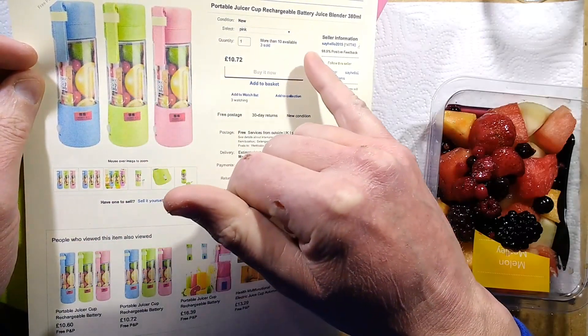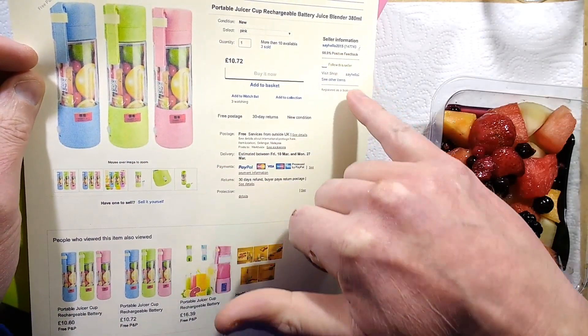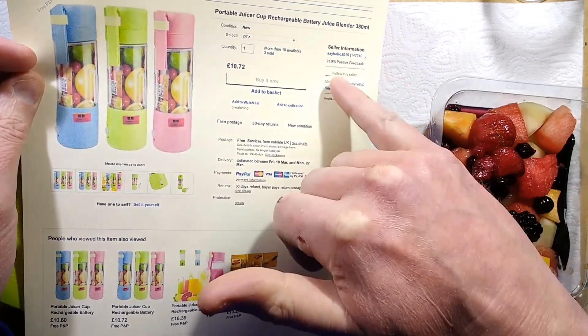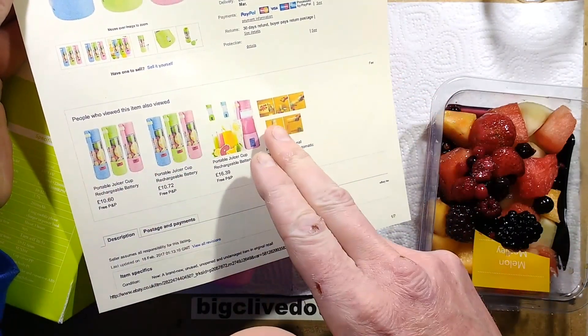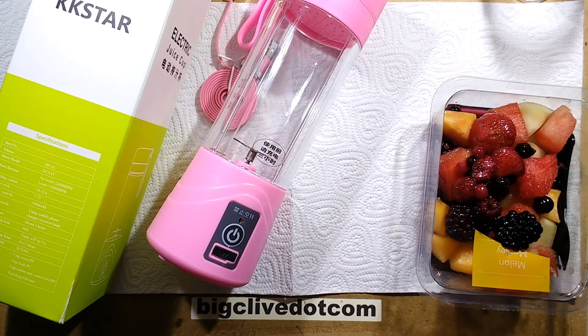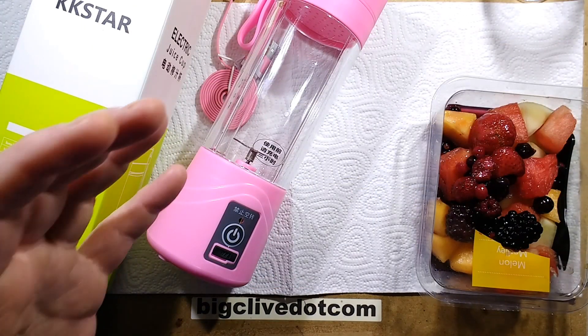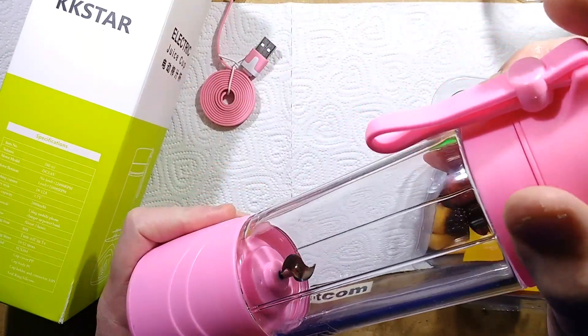And this one came from a seller called SayHello2015. Now see, that's how you should do a name, that's dead easy to remember. However, as always, shop about on eBay because as soon as you all start buying from that one seller, the price will go through the roof. That's assuming it's worth buying, which is something we're going to find out.